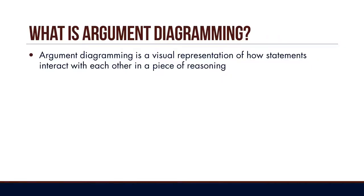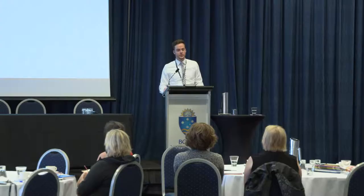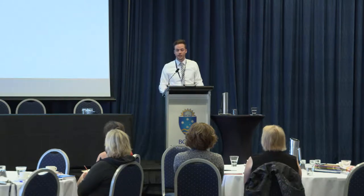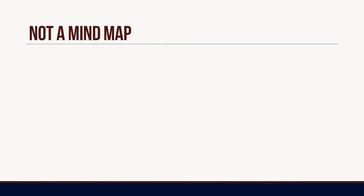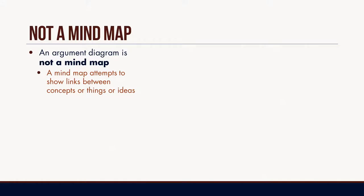So what is argument diagramming? Argument diagramming is simply representing the reasoning of an argument in a visual format. Now, let me begin by defining this negatively. It's not a mind map — students learn quickly when they use that word. A mind map is just a simple thing where you show relationships between ideas.